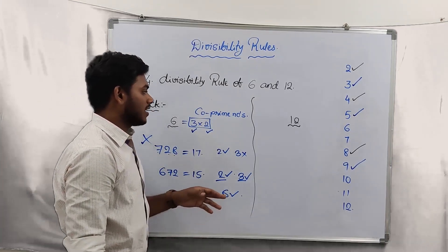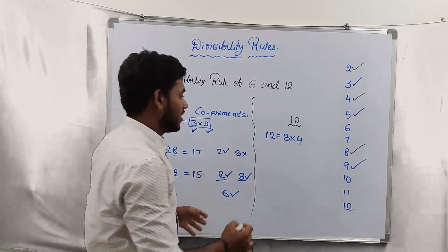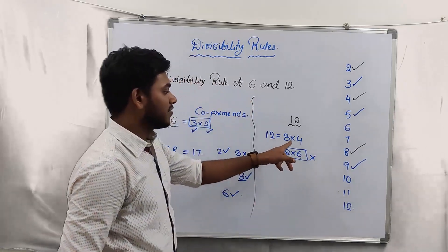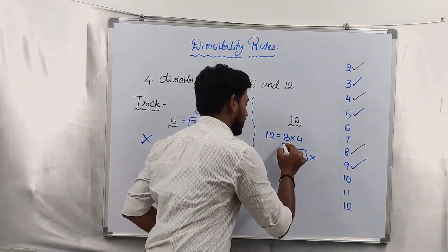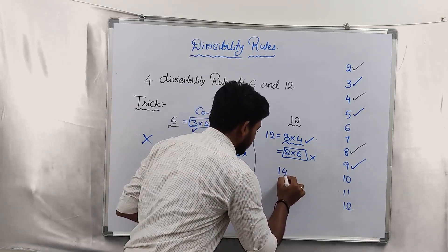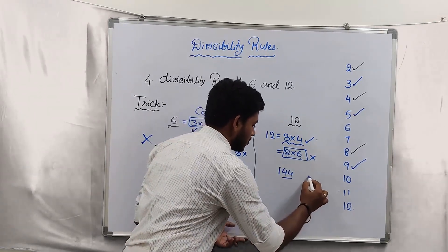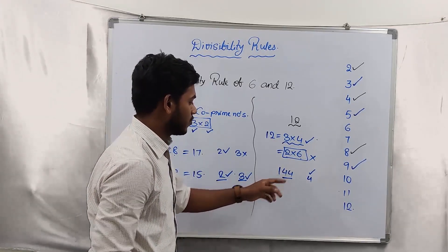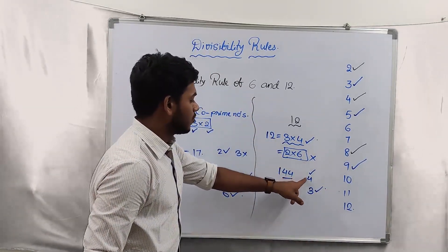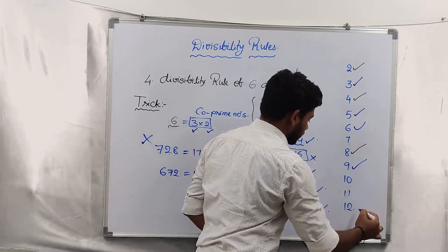In the similar way, we can also write 12 as the product of 3 and 4. Some might think 12 = 2 × 6, but 2 and 6 are not co-prime numbers. 3 and 4 are co-prime numbers, so you must write it that way. For example, 144 — the last two digits are divisible by 4, and 1+4+4 = 9 which is divisible by 3. Once it is divisible by both 4 and 3, this number is divisible by 12 as well. We are done with 6 and 12.